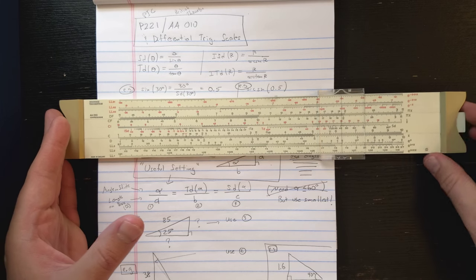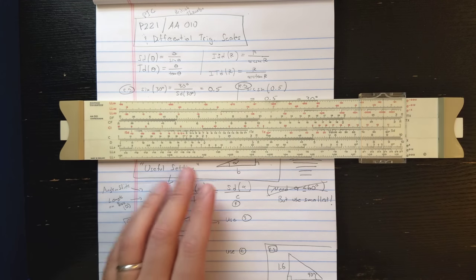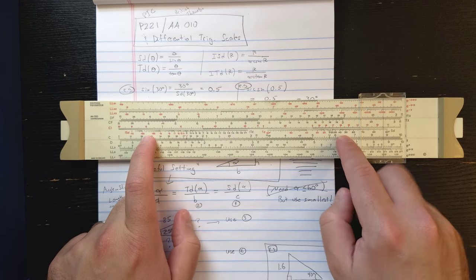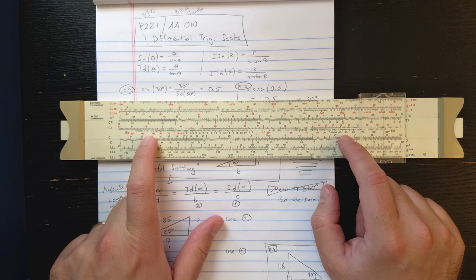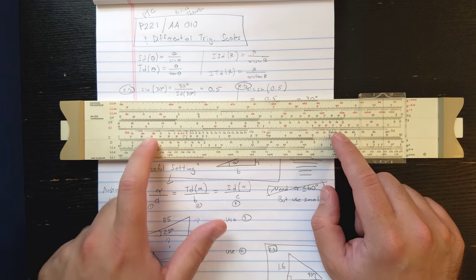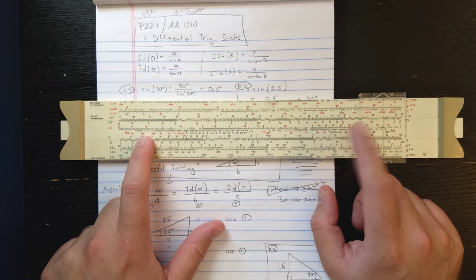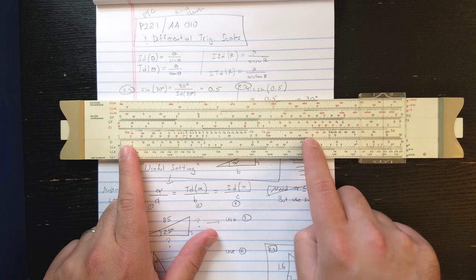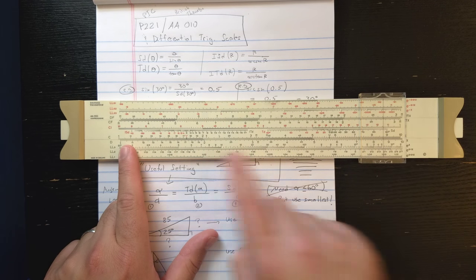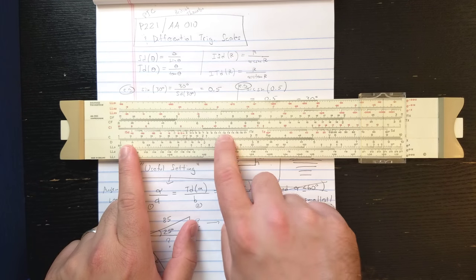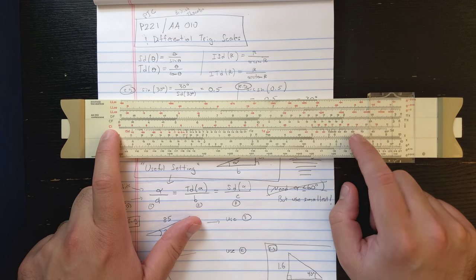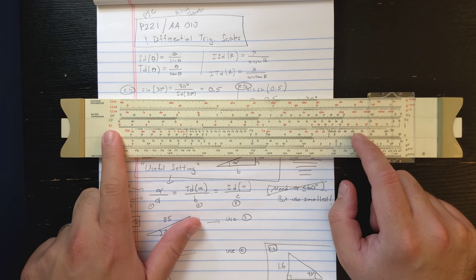The strange thing is instead of CIF, they put on their patented differential trig scales, which are an alternative way to do trigonometry. Some slide rules only have these trig scales. These are kind of strange scales. There's actually four scales: a scale called TD, the scale called SD, ISD, and ITD. And they all fit in one line in the place of the one CIF scale, so they're very compact.